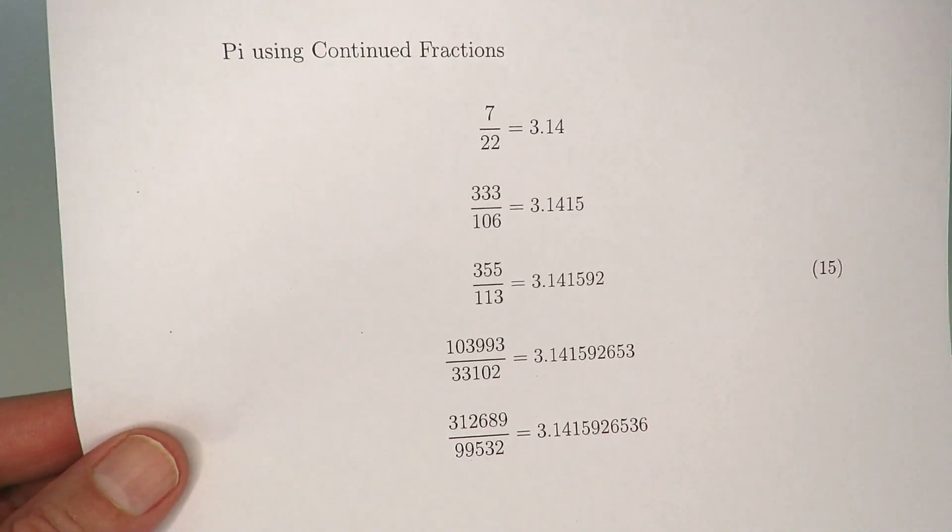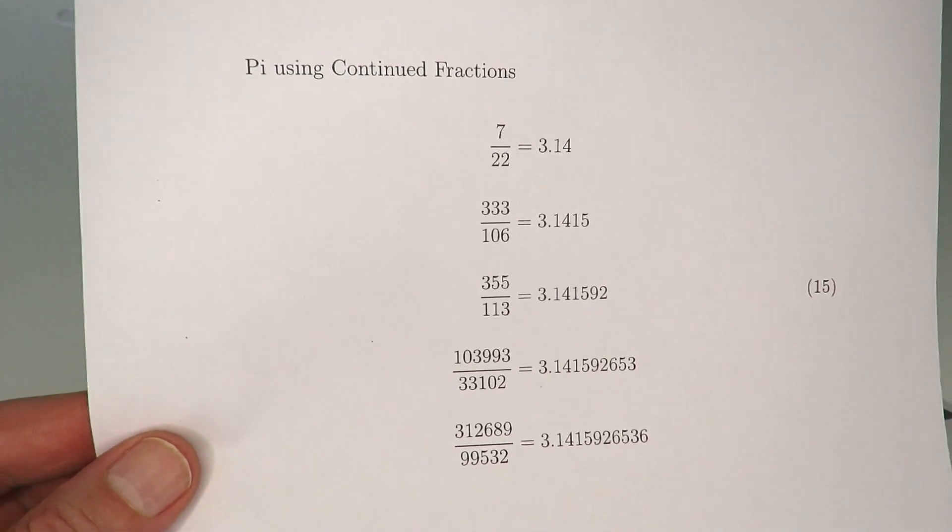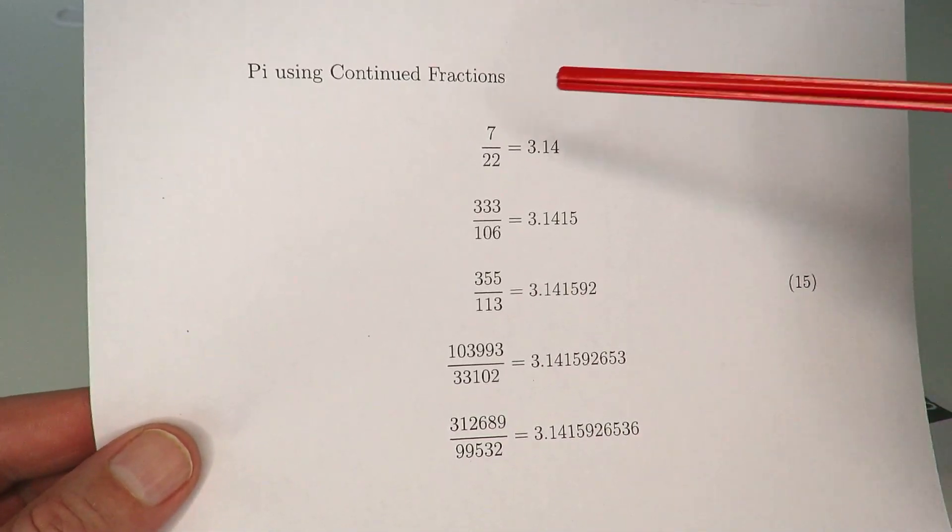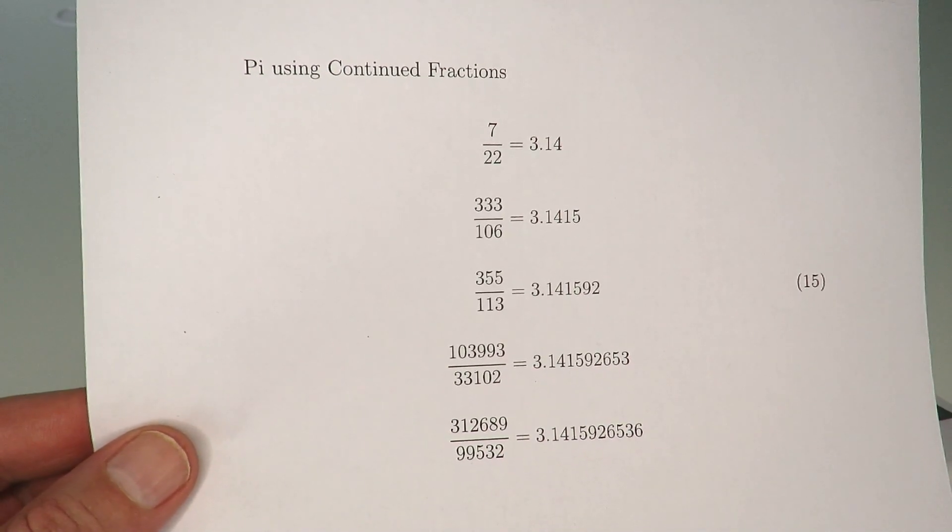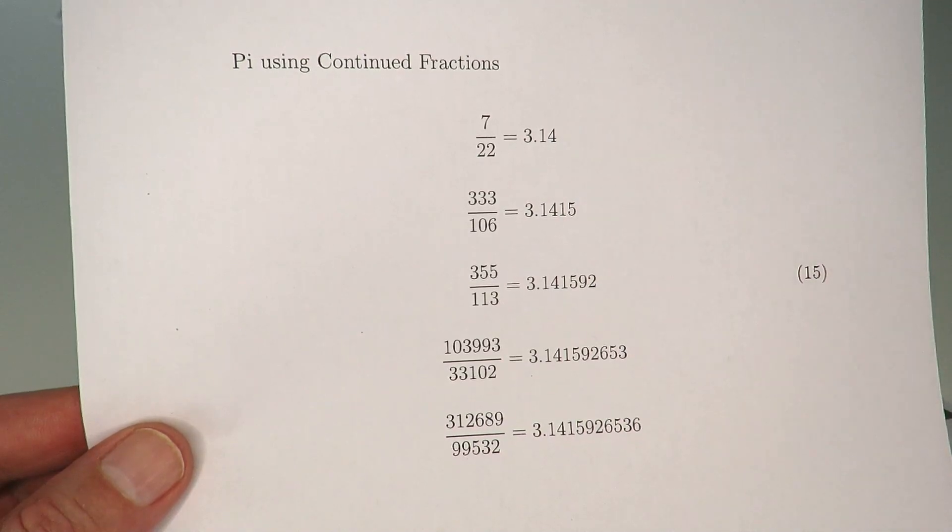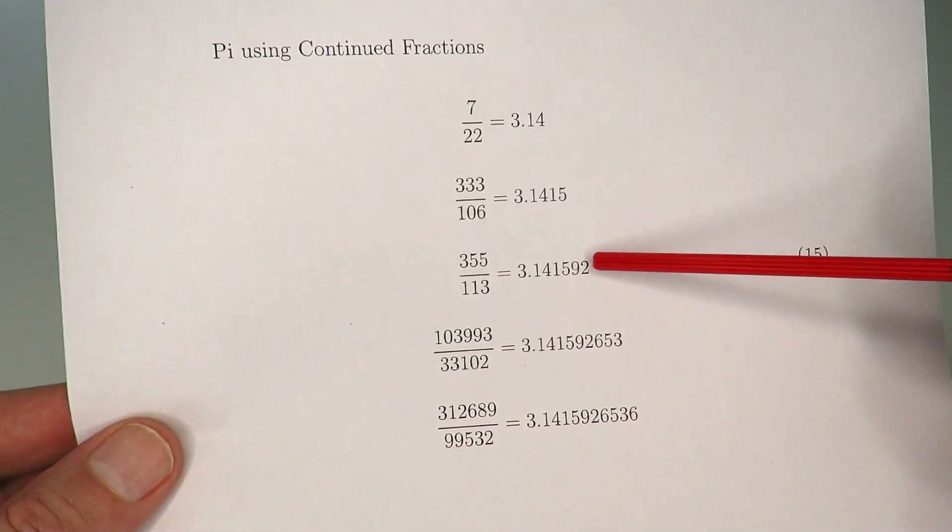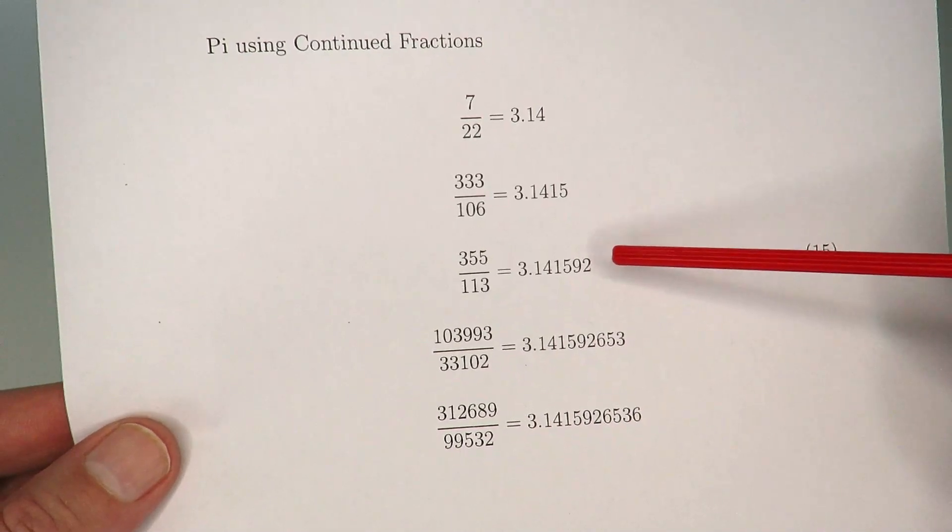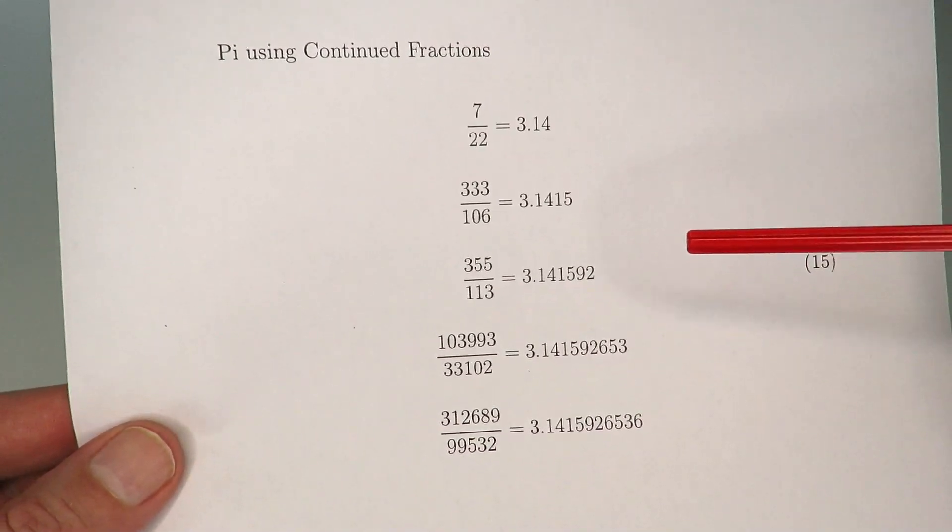So I thought it'd be fun today to try and create a gearing ratio that approximates Pi. The way I've done that is to choose one of these fractions to try to build a gearing mechanism around that. And the one I ended up choosing was the middle one, 355 over 113, which gives us an accuracy of six decimal places.